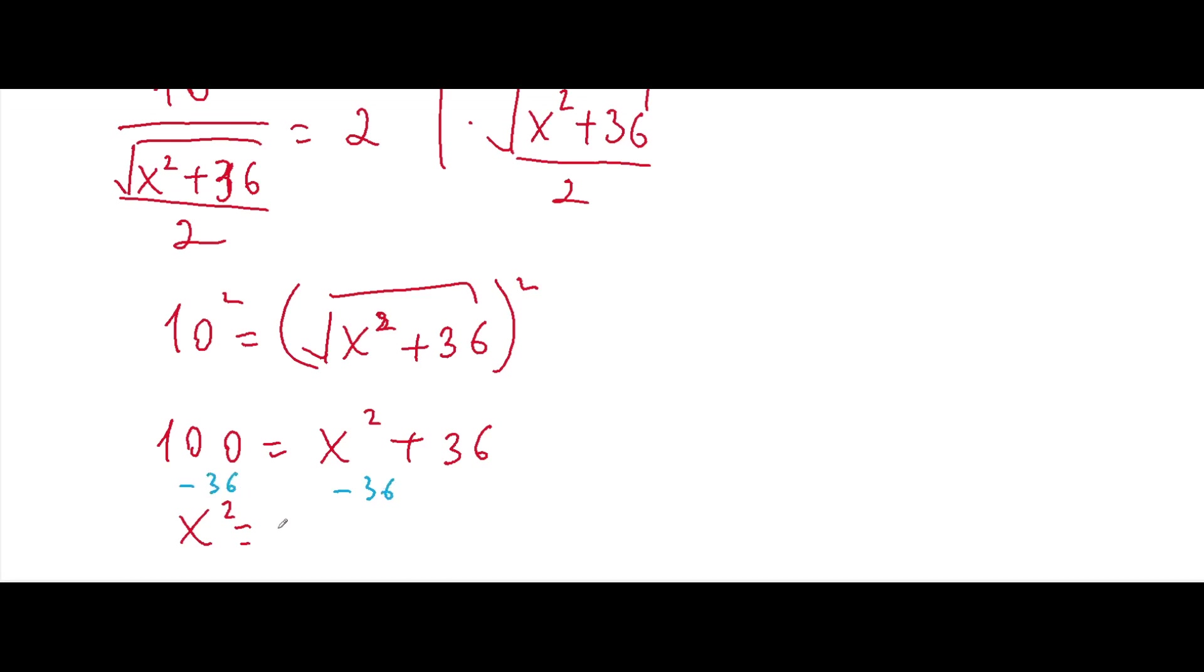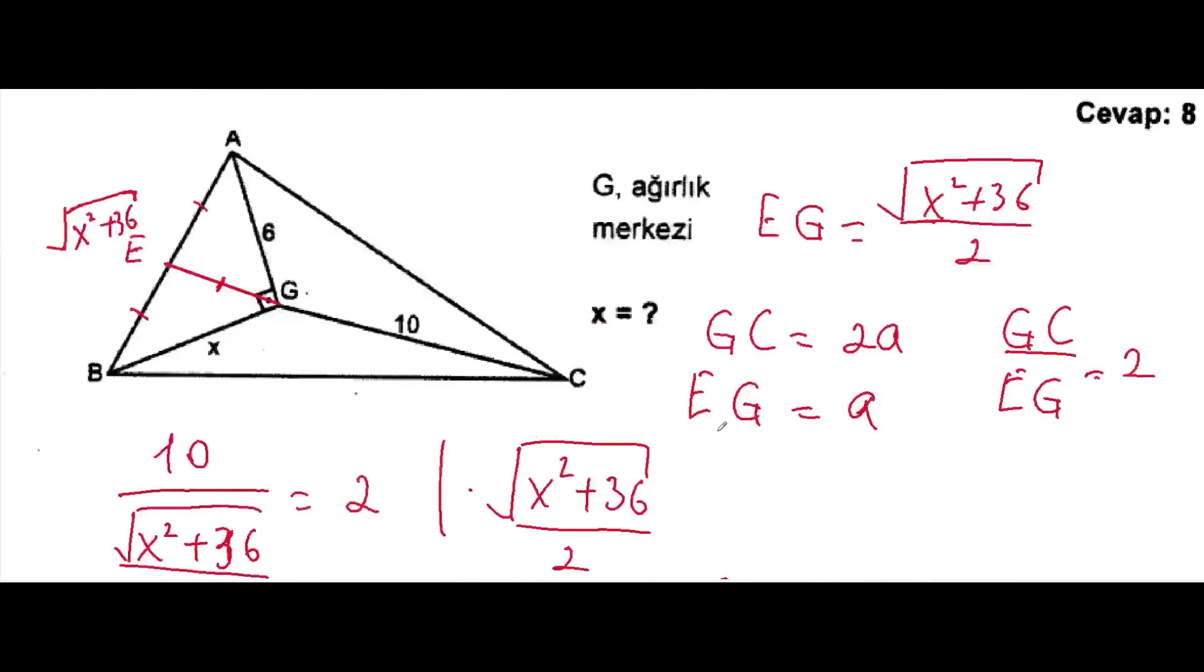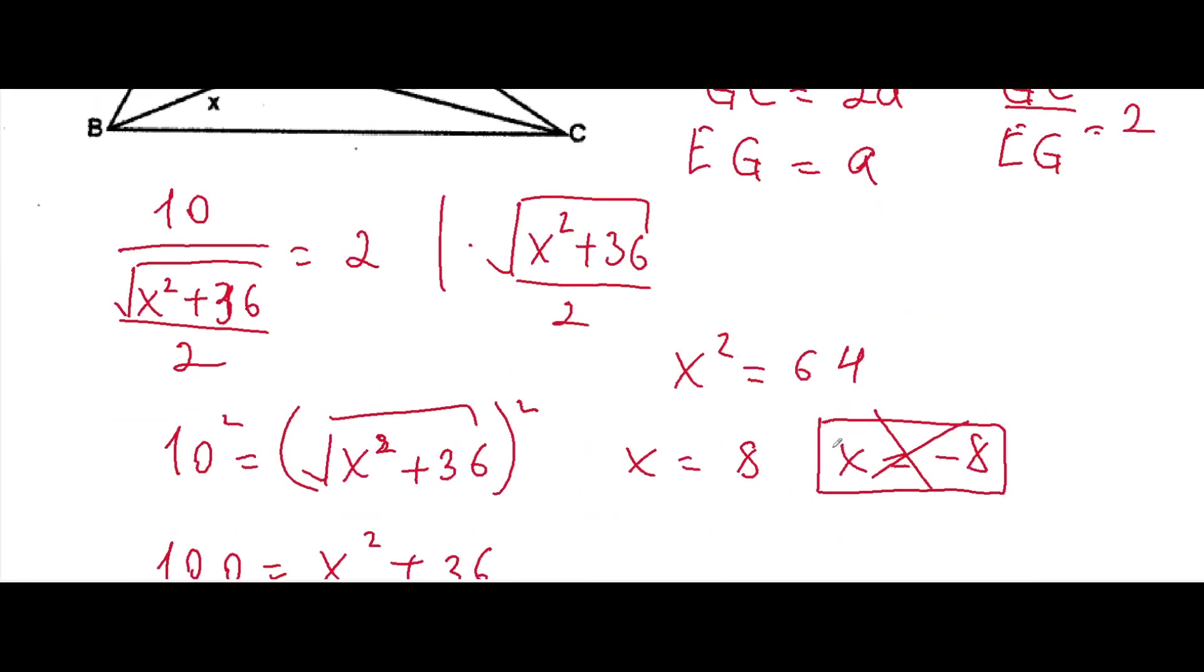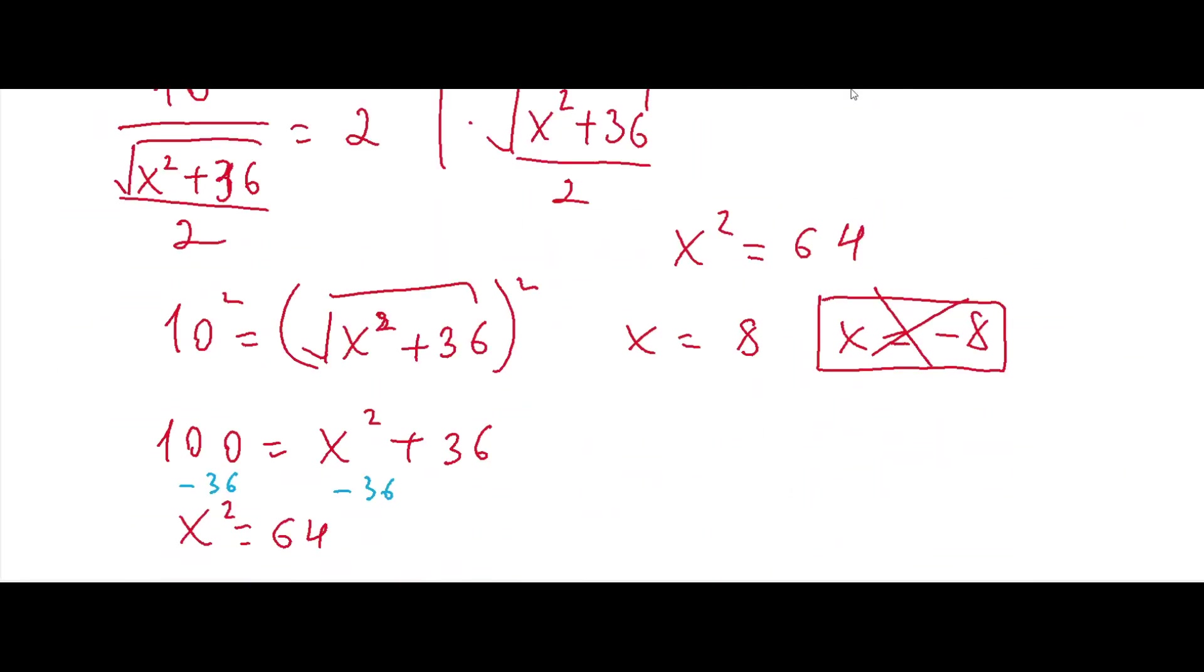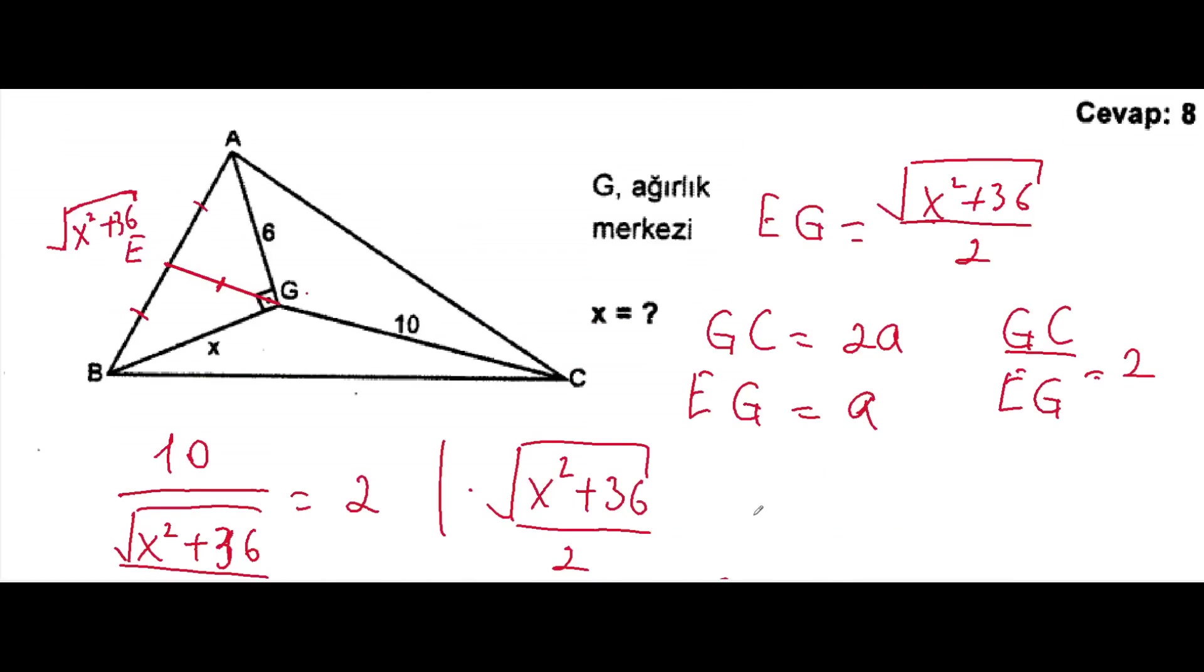We'll get at the end 64. And if x squared will be 64, x will be either 8 or minus 8. We know that minus 8 will not be possible here because this side is always a positive number, so our solution, our answer, is 8.